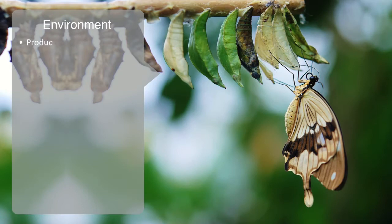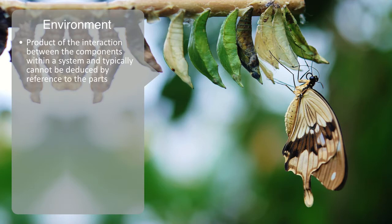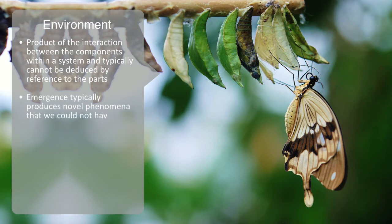Emergent properties are the product of the interaction between the components within a system and typically cannot be deduced by reference to the properties of the parts. Thus, emergence typically produces novel phenomena that we could not have predicted until we ran the system and all the parts have interacted.